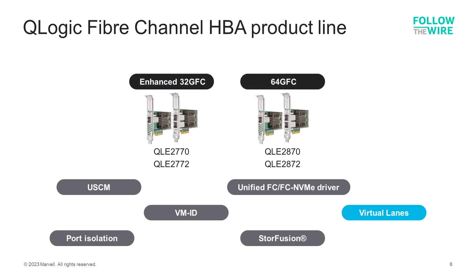Here are the Q-Logic HBAs that support virtual lane technology. The QLE2770 series adapters provide 32GB fiber channel connectivity, and the QLE2870 series are the 64GB fiber channel offerings. While this capability is somewhat limited in scope today with Cisco switches only, work continues with other switch vendors and OS vendors to further enhance this capability. Customers can future-proof their storage environments with Q-Logic fiber channel HBAs today and reap the benefits of continued integration in the very near future.